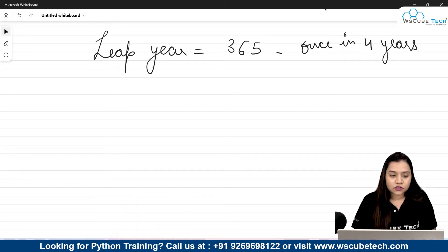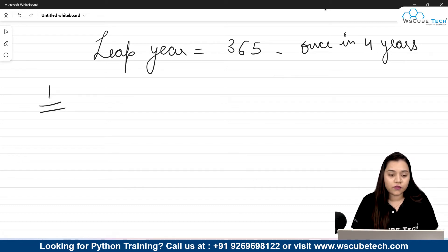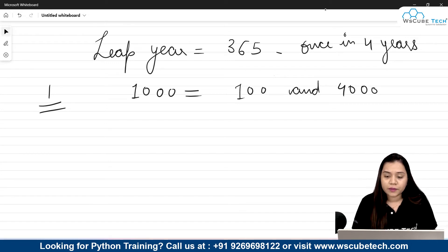Now some conditions to check leap year. Condition number one: if it is a century year — let's say it's 1000 — then it should satisfy that it should be a multiple of 100 and also a multiple of 400. Then only it will be considered as a leap year.